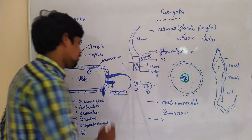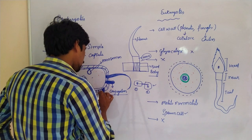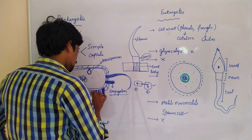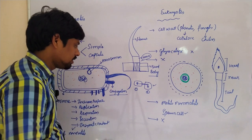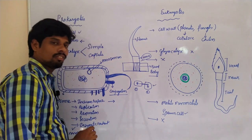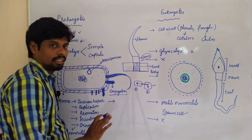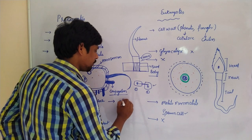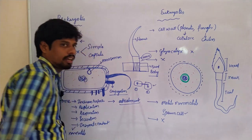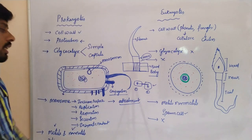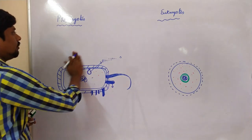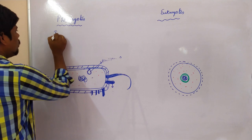Another structure is the fimbriae. Fimbriae are also very short structures similar to pili, but they are not involved in conjugation or motility. They are only involved in attachment — attachment to surfaces and to other bacteria.